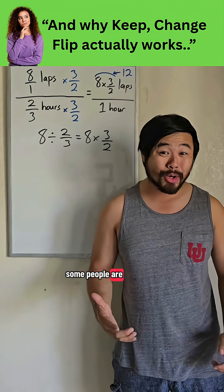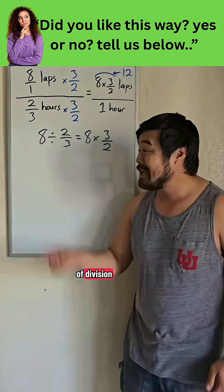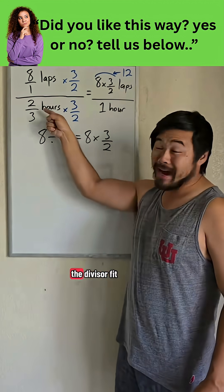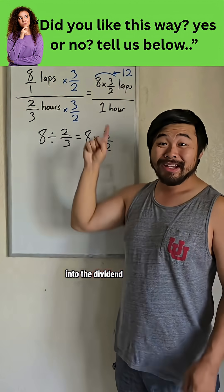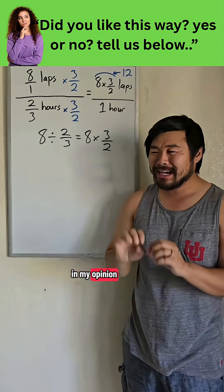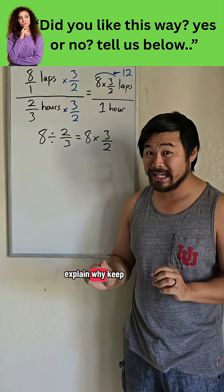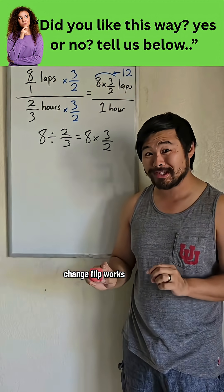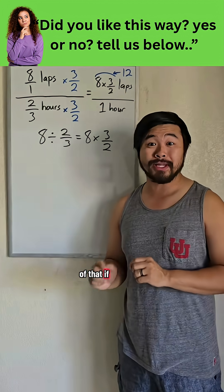Now I know some people are more used to the measurement model of division — how many of the divisor fit into the dividend? In my opinion, that is a little harder to explain why keep-change-flip works, but I can make a video of that if you really want me to.